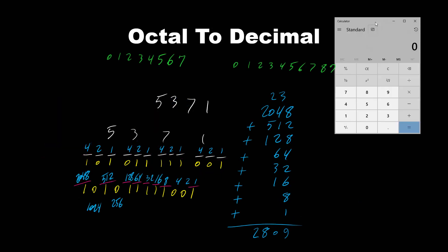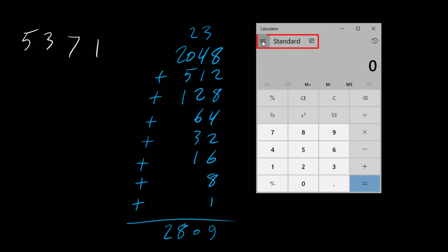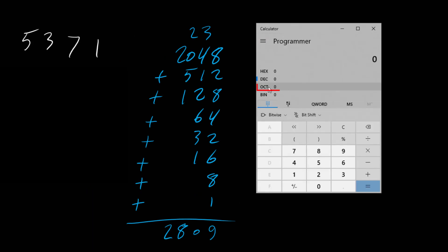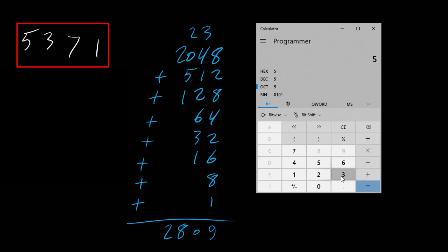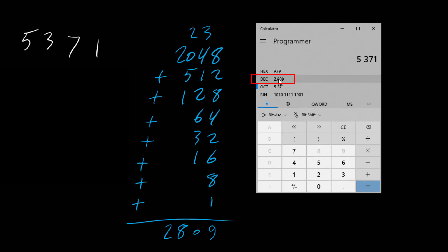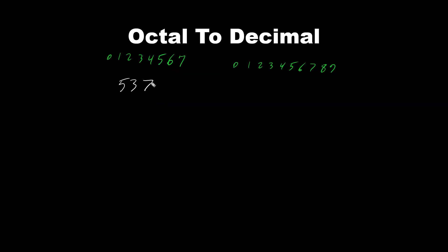Now let's verify using a calculator. Changing the view from standard to programmer view and making sure OCT is selected. Our number is 5371 — that's the octal number we want to convert to decimal. Notice that only 0 to 7 are available; 8 and 9 are grayed out. Entering 5, 3, 7, 1 — the decimal value shown is 2809. Therefore, the octal number 5371 is equivalent to the decimal number 2809.